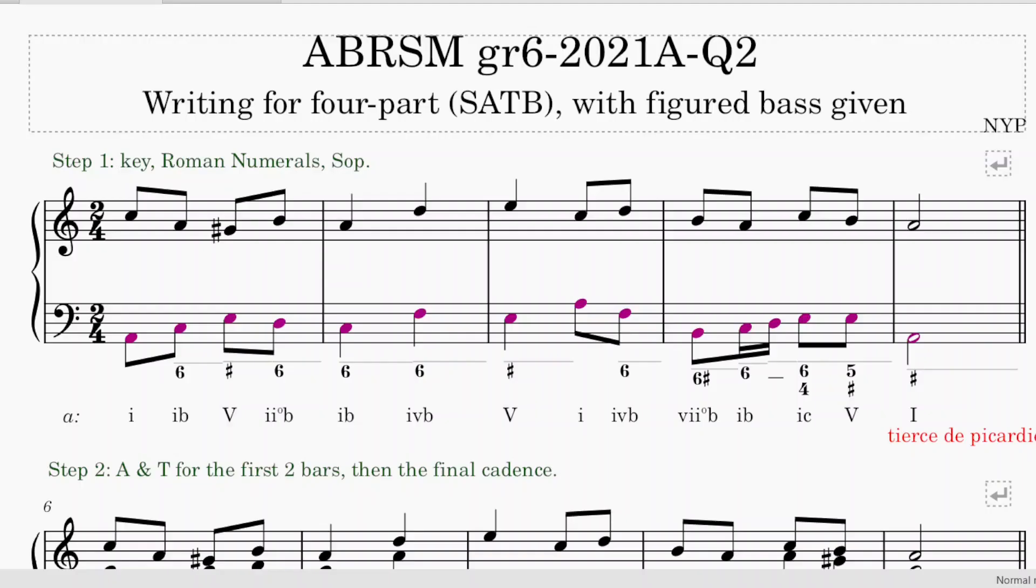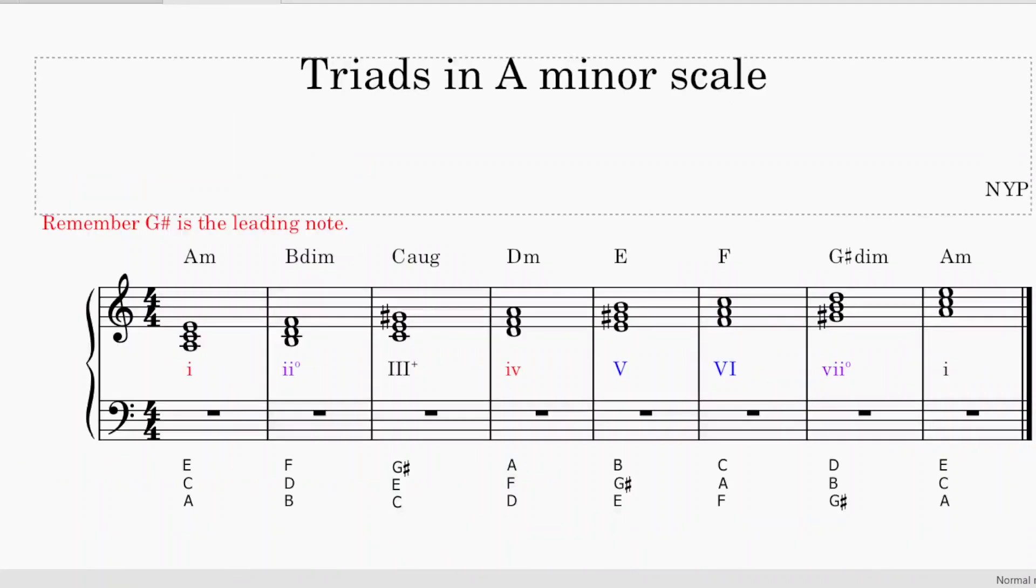Step 1 is to look at the key, then write out the roman numerals, and then the soprano line. The key signature given is no sharp and no flat. That means either C major or A minor. By confirming it with the first note A in the bass, and also the A in the last bar, we confirm that this is in A minor. If you wish, you can write out the triads in A minor, either in the staff or in letter names. But make sure you understand that there is a G sharp, because this is in A minor. And remember, leading note is always raised.